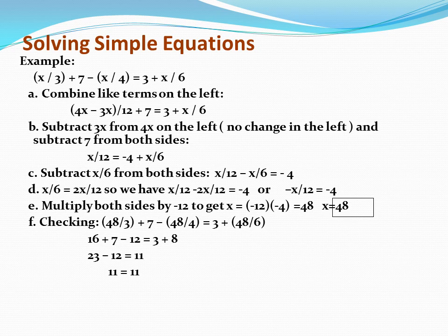Another example: x/3 + 7 - x/4 = 3 + x/6. Combine like terms on the left. Subtract 3x from 4x on the left and subtract 7 from both sides. Subtract x/6 from both sides to obtain x/12 - x/6 = -4. This gives us x/12 - 2x/12 = -4, or -x/12 = -4. Multiply both sides by -12 to get x = 48. A negative number times a negative number is a positive number. Our solution is x = 48.